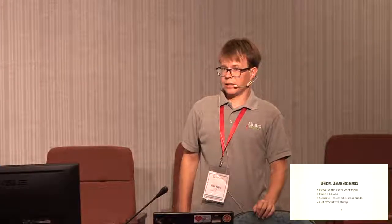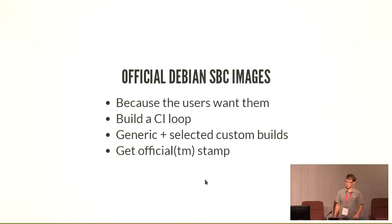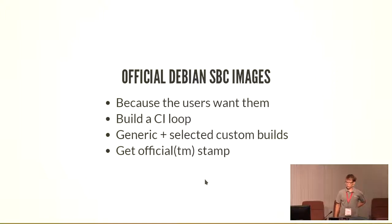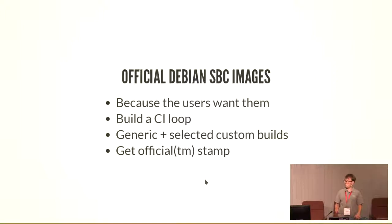Even if I make these images, they're still going to be Riku's images and not official Debian images. I believe our end users deserve already-built ARM images and we should start making them. We should build a CI loop that builds them the same way we build the Debian installer — having a generic image and perhaps some custom builds for a few popular platforms. Then get someone's official stamp on it — probably Steve's.